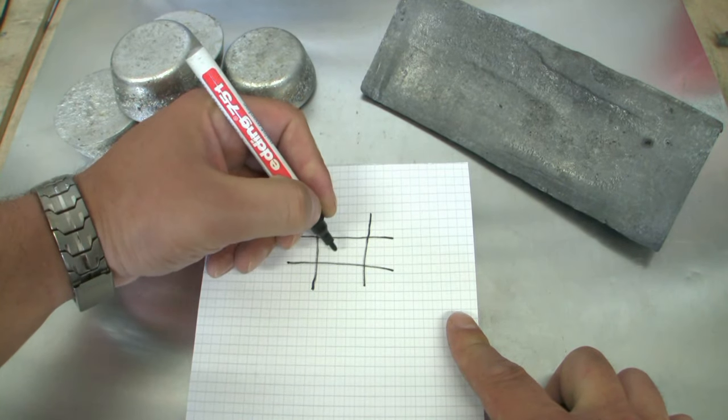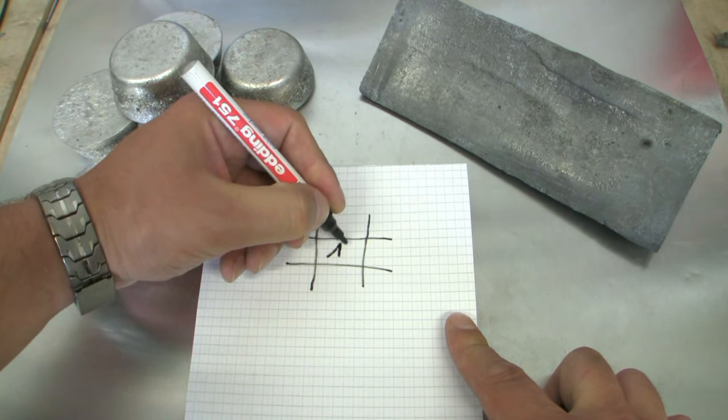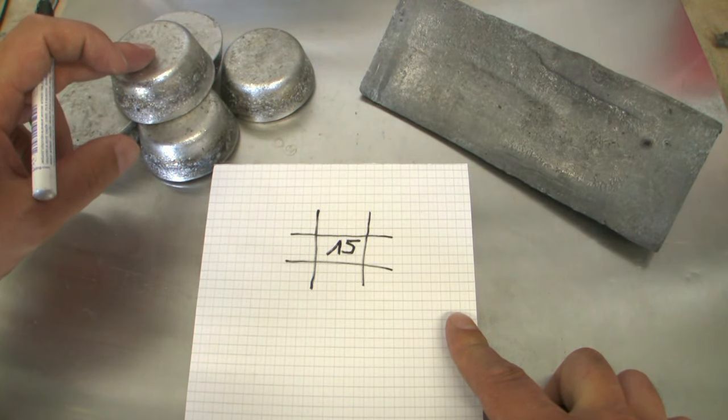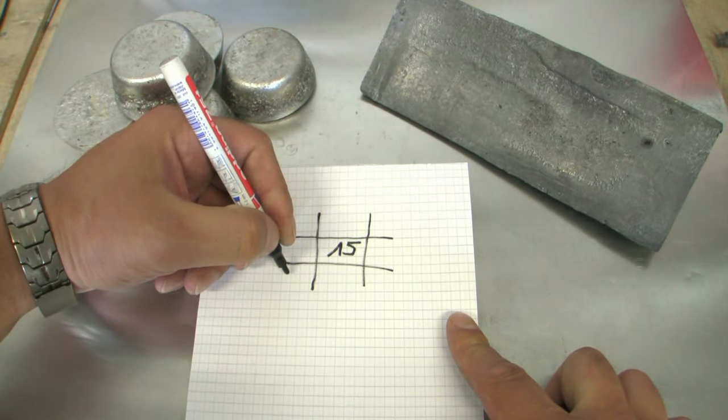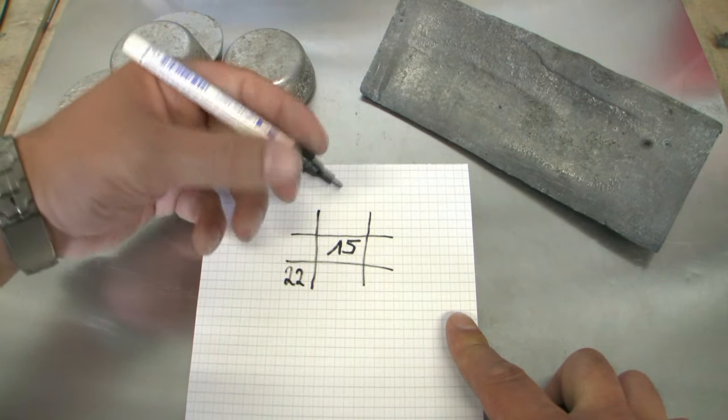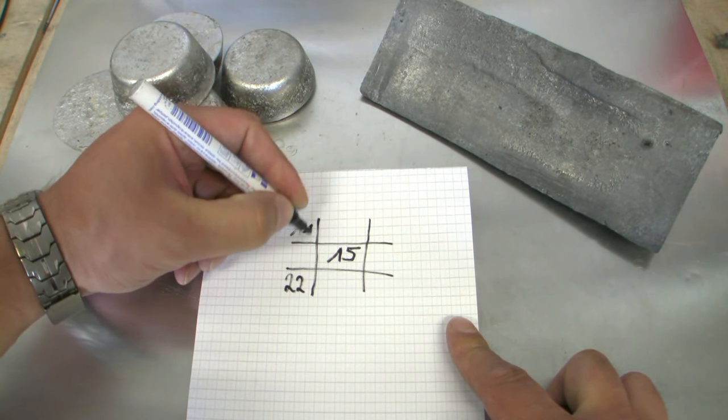Like I told you, my goal is a Brinell hardness of 15. That goes in the middle of the mixing cross. Now I choose my linotype with a Brinell hardness of 22 on the left side and the range lead with the Brinell hardness of 11.